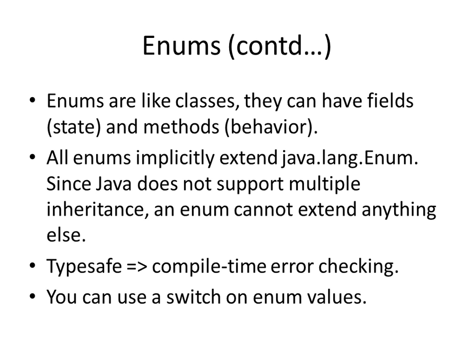Enums are just like classes, so they can have fields and methods. Fields are used to represent the state of the class and methods are for showing some behavior. And all enums implicitly extend java.lang.Enum. Since they already extend something and Java does not support multiple inheritance, an enum will not be able to extend anything else.